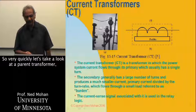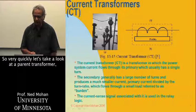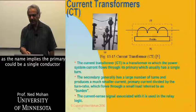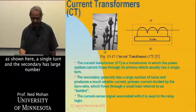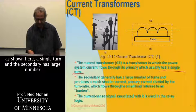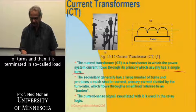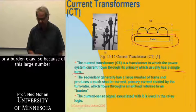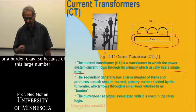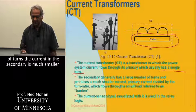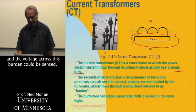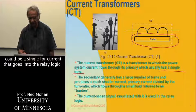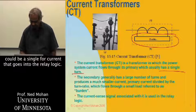Let's take a look at a current transformer. It works on a transformer principle, as the name implies. The primary could be a single conductor — a single turn — as shown here. The secondary has a large number of turns, and it is terminated in a so-called load or burden. Because of this large number of turns, the current in the secondary is much smaller, and the voltage across this burden can be sensed as a signal for current that goes into the relay logic.